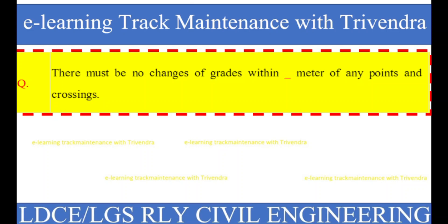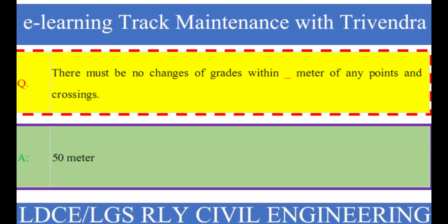Question number 52: There must be no changes of grades within how many meters of any points and crossings? The right answer is 50 meters.